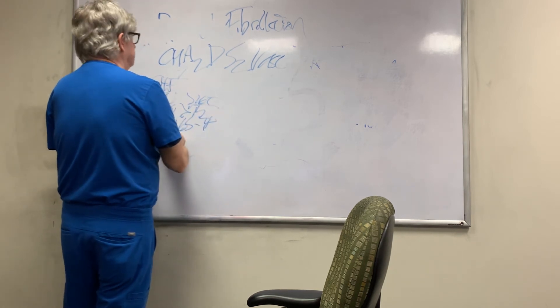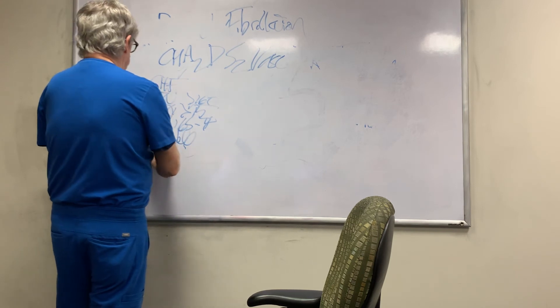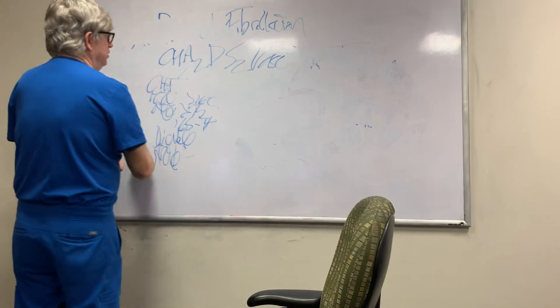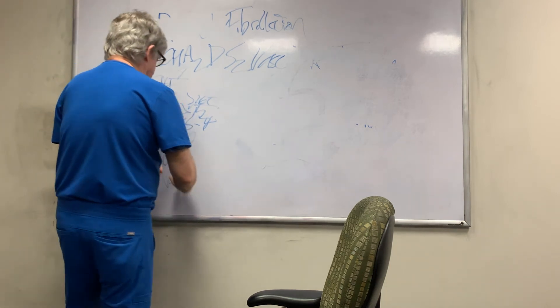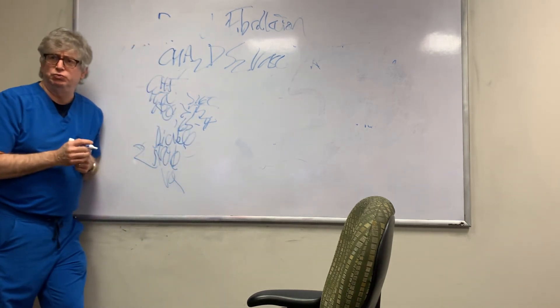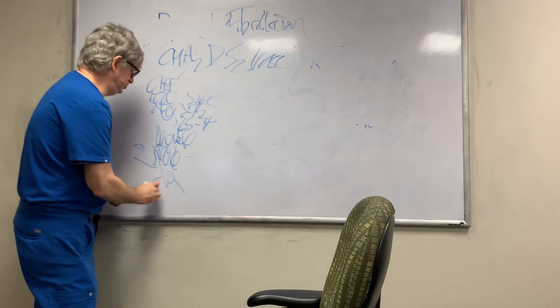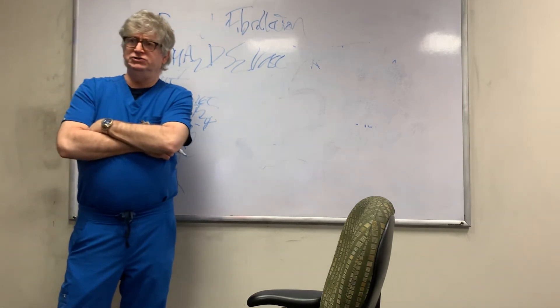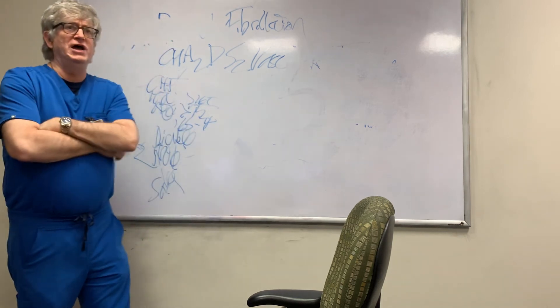D is diabetes. S is a prior stroke—you get two points here. V is vascular disease, underlying coronary disease, or peripheral arterial disease. And S is sex category, which is women have a higher incidence than men. This is being thrown out of this.